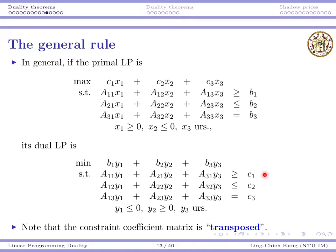We want the dual program because we want to find an upper bound of the primal objective value. Through that principle, we construct the dual program. And it should be convincing that if we want this principle to hold, then the dual program is determined uniquely. For every primal component, you have a corresponding dual component — it must be that specific thing defined by the rule, and nothing else.